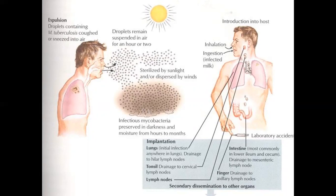When this droplet containing the bacilli is introduced into the host, it can directly infect the lungs and drain to the hilar lymph nodes, or it can drain to the cervical lymph nodes or any other lymph nodes. If the patient ingests infected milk, it may infect the lower ileum and cecum. In other cases, there may be secondary dissemination to other organs via lymphatic spread.